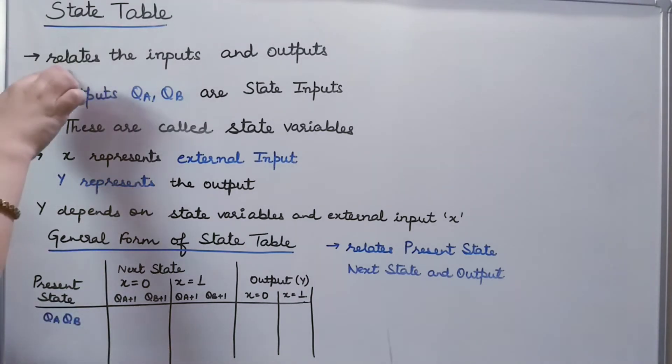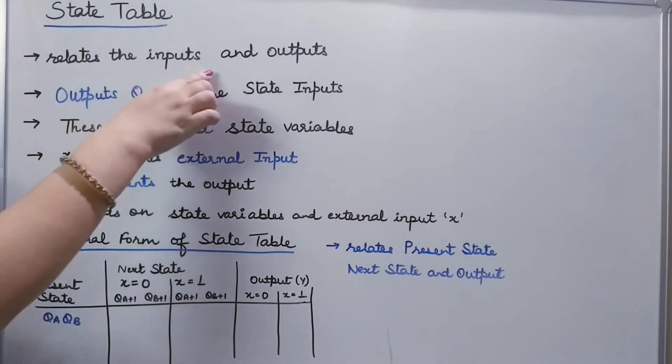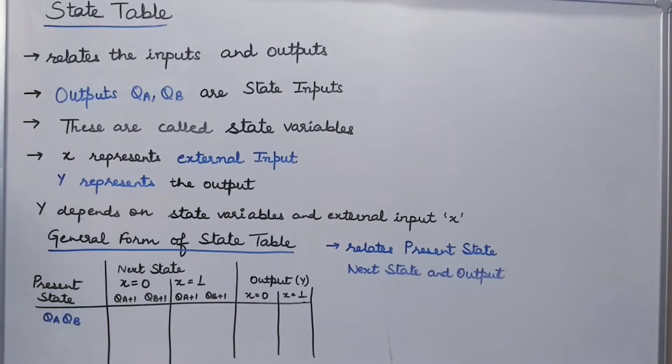What is the role of a state table? It relates the input and the output of a sequential circuit. There are some inputs, there are certain outputs. To relate this, we need a state table.